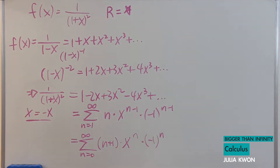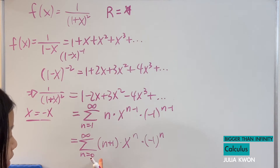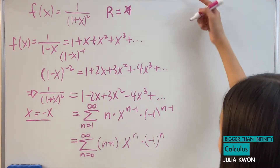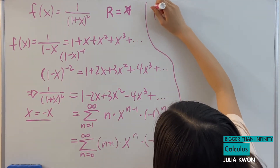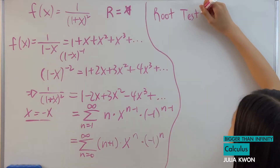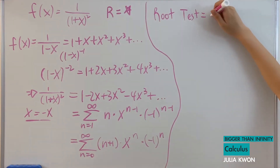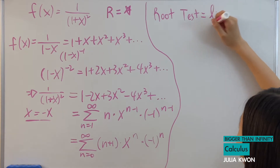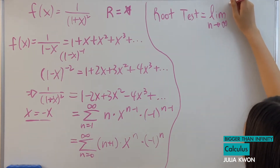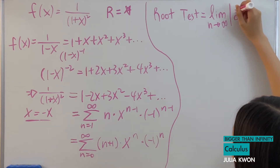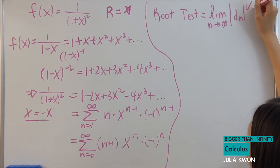So now that we have found the power series representation for this function, we can solve for the radius of convergence. In order to do that, we're going to use the root test, which requires us to take the limit as n approaches infinity of the absolute value of a sub n to the power of 1 divided by n.